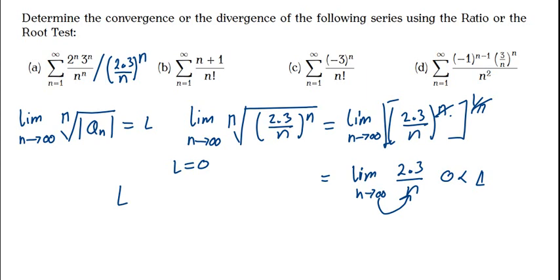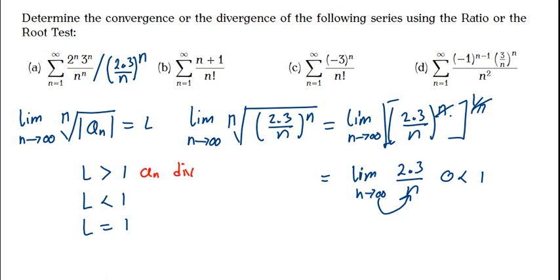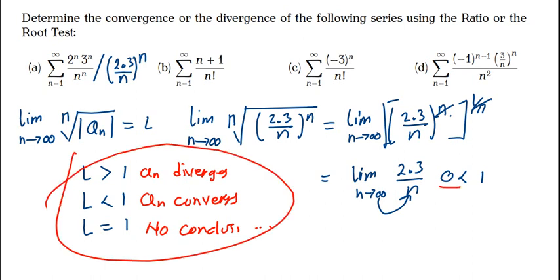Here are the three situations for both the root test and the ratio test: if L is greater than 1, the series diverges; if L is less than 1, the series converges; if L equals 1, you cannot make a conclusion. Having this knowledge, and since our L is 0, which is less than 1, our series converges.